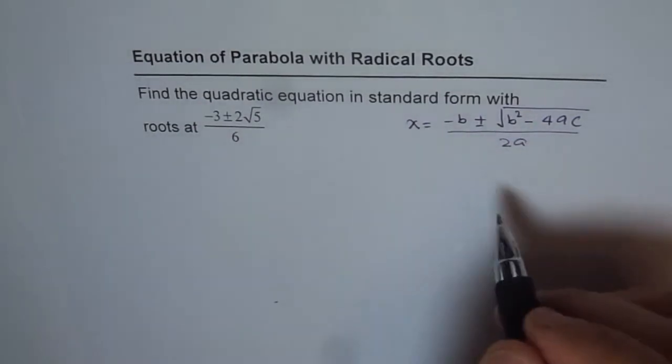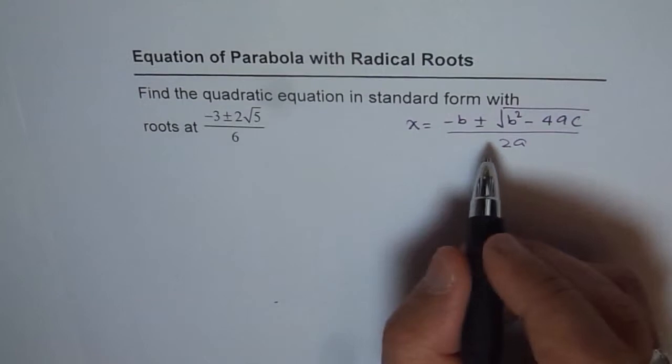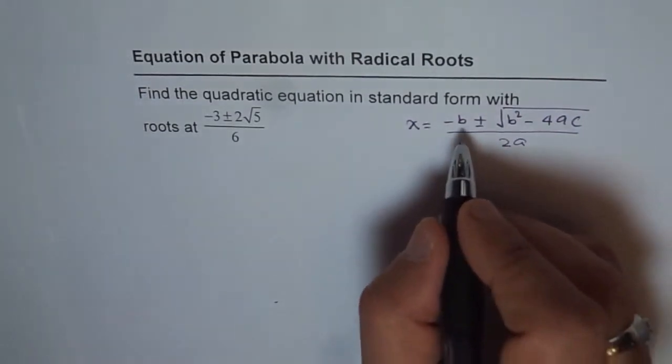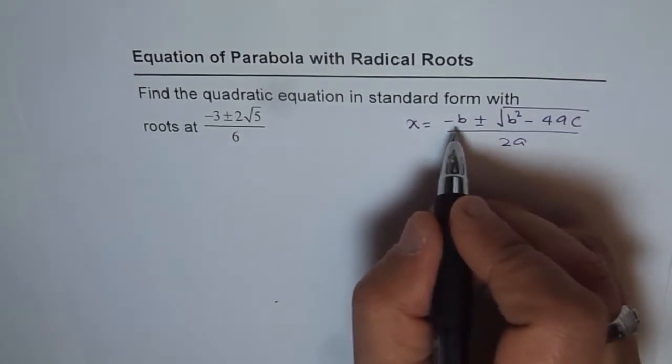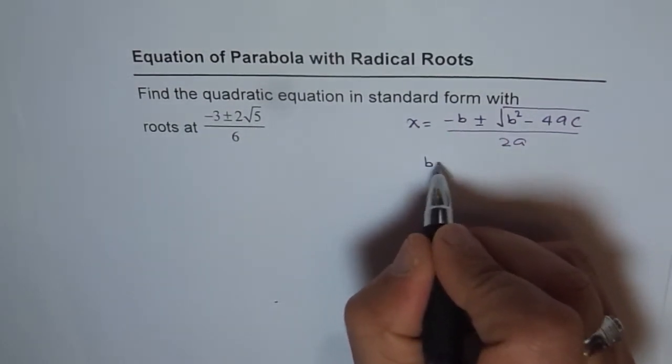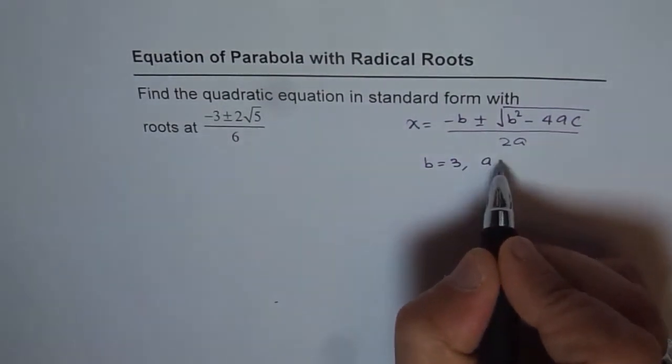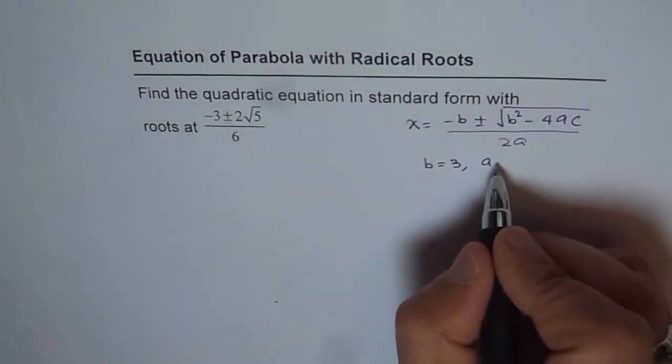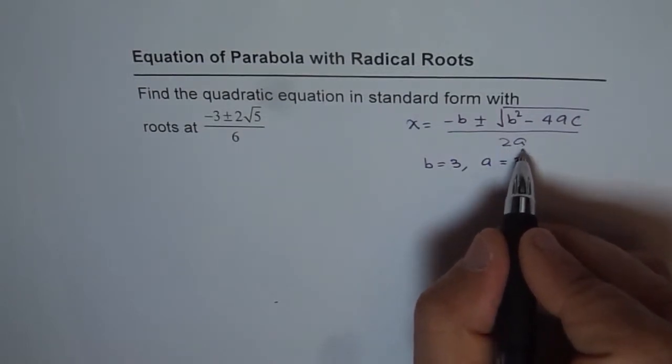If you compare this with the given equation, you can see what b equals. From comparison, b = 3, because -b corresponds to -3. And what is a? Since 2a = 6, therefore a = 3 as well.